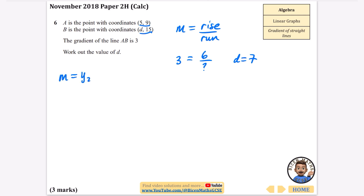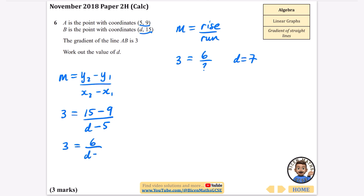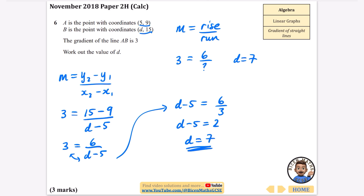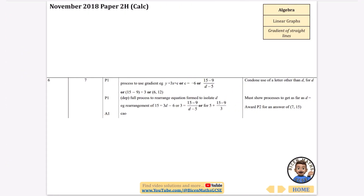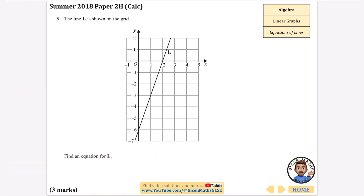The gradient formula is (y₂ − y₁) / (x₂ − x₁). Here, gradient = 3, y₂ = 15, y₁ = 9, x₂ = d, x₁ = 5. So: 3 = 6 / (d − 5). Rearranging by multiplying both sides gives d − 5 = 6 ÷ 3 = 2, therefore d = 7. The algebraic approach confirms d = 7.